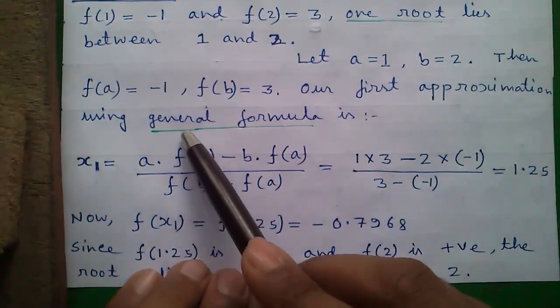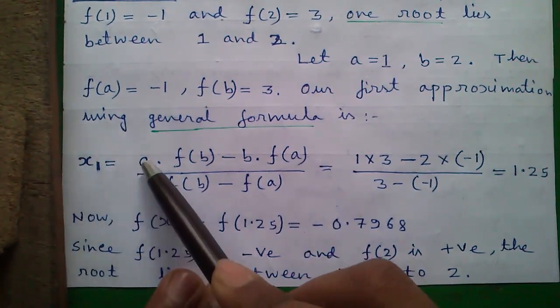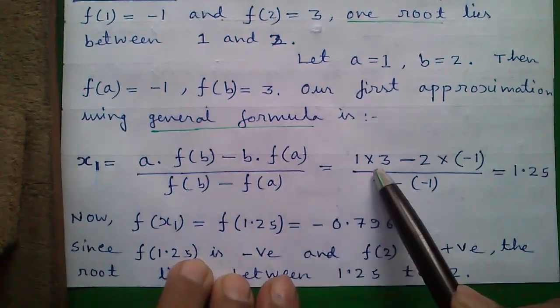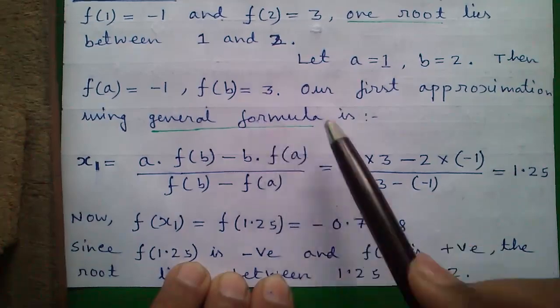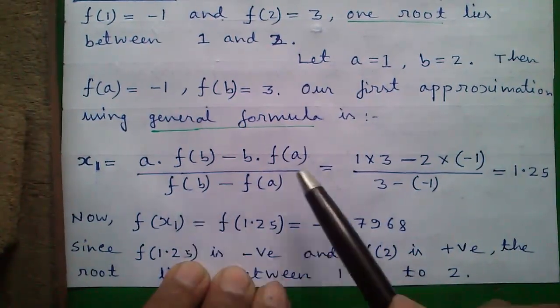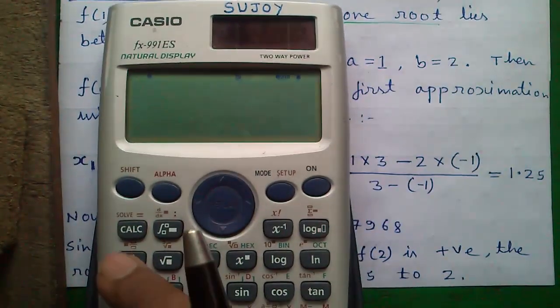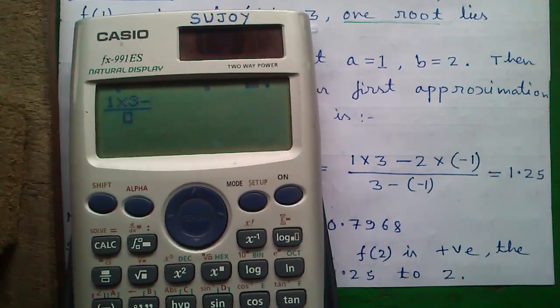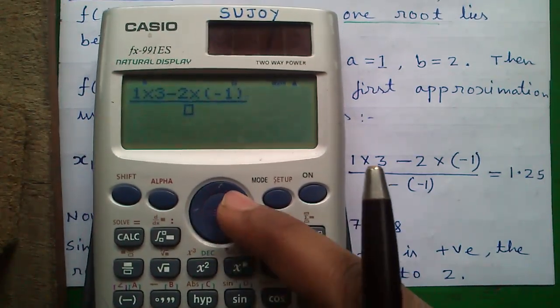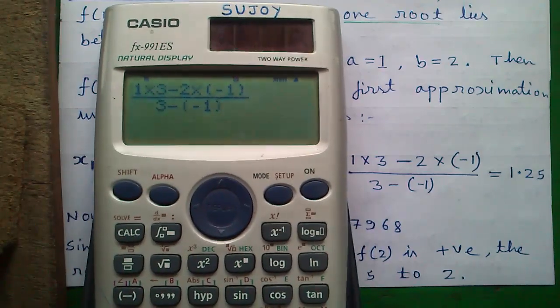So our first approximation using general formula is, this is the general formula of Regula Falsi method. First approximation x₁ = [a·f(b) - b·f(a)] / [f(b) - f(a)]. a is 1 and f(b) is 3 minus b is 2, f(a) is -1 divided by f(b) is 3 and f(a) is -1. It will be 1.25. I will show you. Press the fraction button 1 into 3 minus 2 into first bracket the minus symbol 1 divided by 3 minus first bracket minus symbol, f(b) is equal to 1.25.